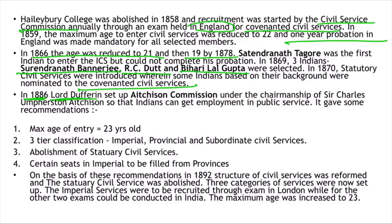In 1886, Lord Dufferin established the Aitchison Commission under the chairmanship of Sir Charles Aitchison. Its main motive was to increase Indian employment in public service. Key recommendations included raising the maximum age of entry to 23 years and introducing a three-tier classification: imperial services (central), provincial services (state level), and subordinate services (clerical staff). The commission also recommended abolishing the statutory civil services.